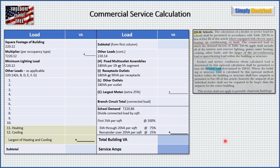Article 220, Section 86 is where we talk about schools, and this is the optional method of calculating a school service — we're under Part 4 in Article 220. It reads: '220.86 Schools — the calculation of a feeder or service load for schools shall be permitted in accordance with Table 220.86 in lieu of Part 3 of this article, where equipped with electric space heating, air conditioning, or both.' That's very important because we cannot use this optional calculation if we do not have at least one of either electric space heating or air conditioning. Otherwise we have to use the standard method.